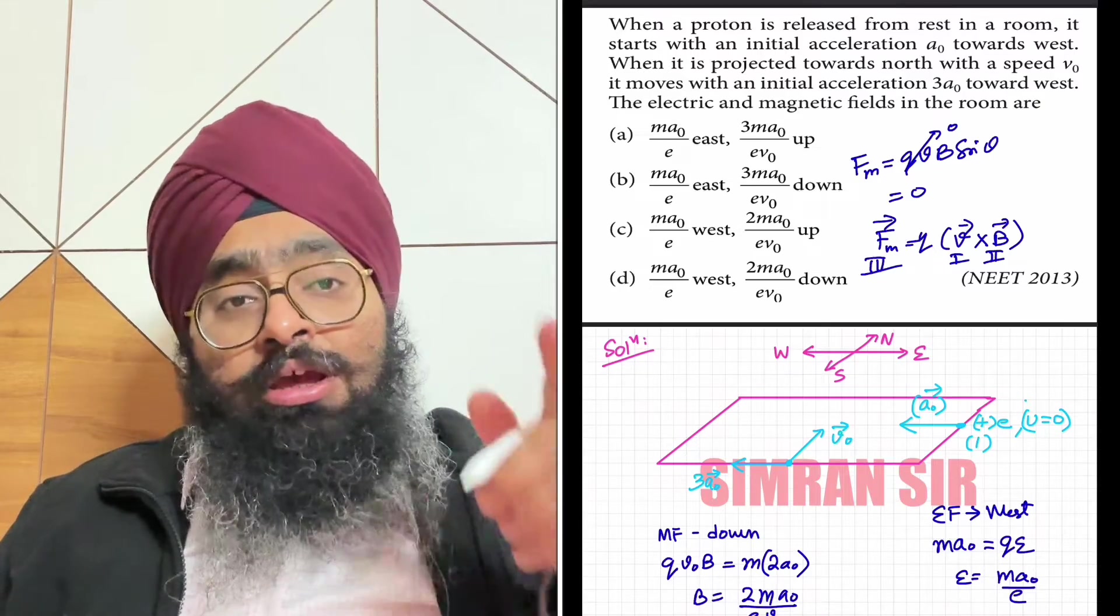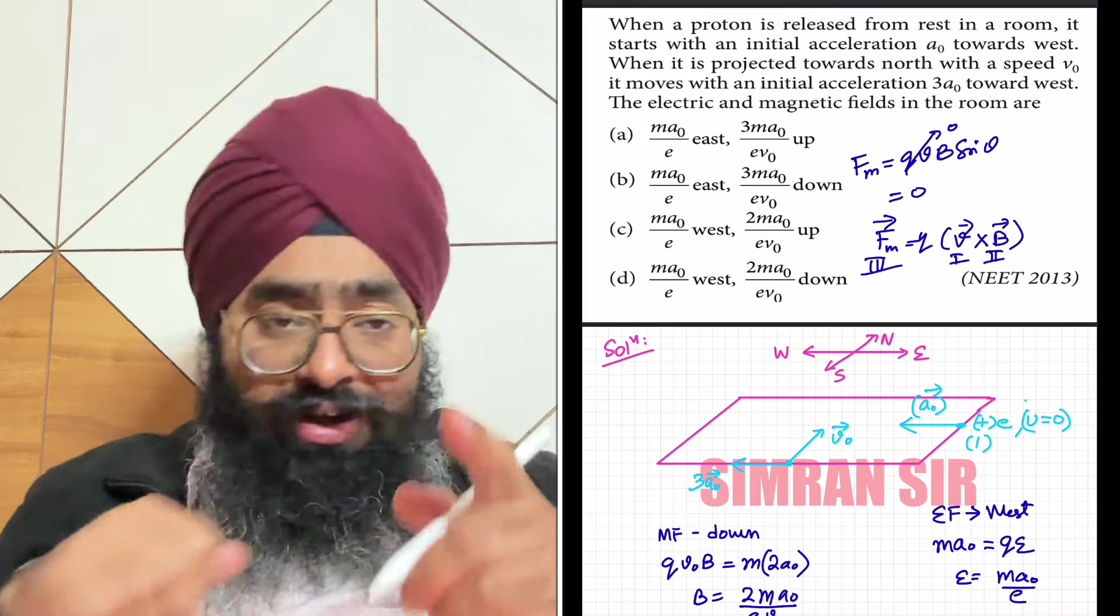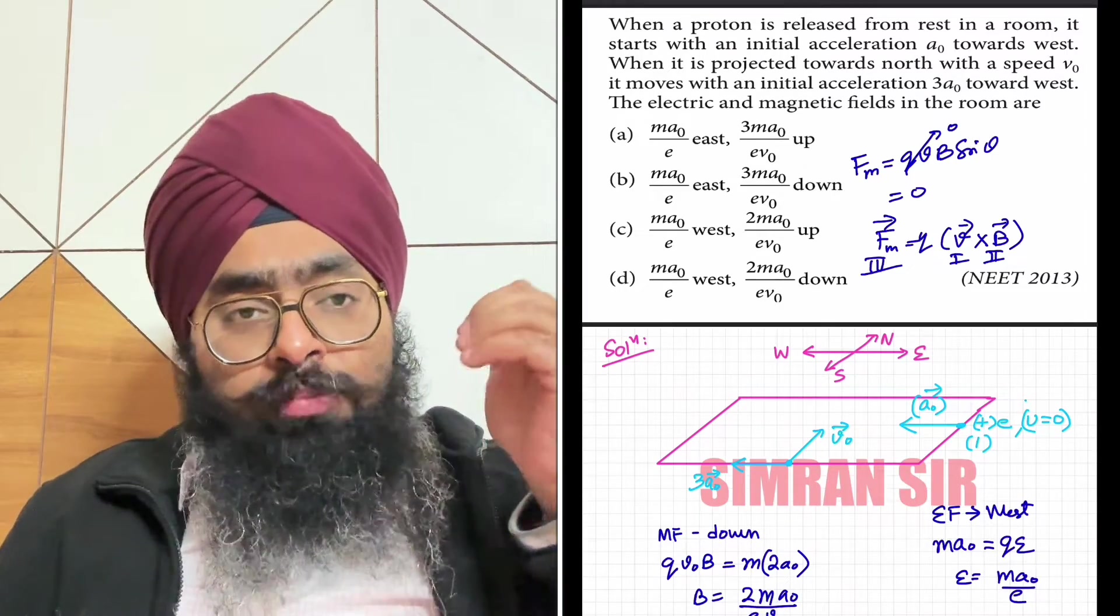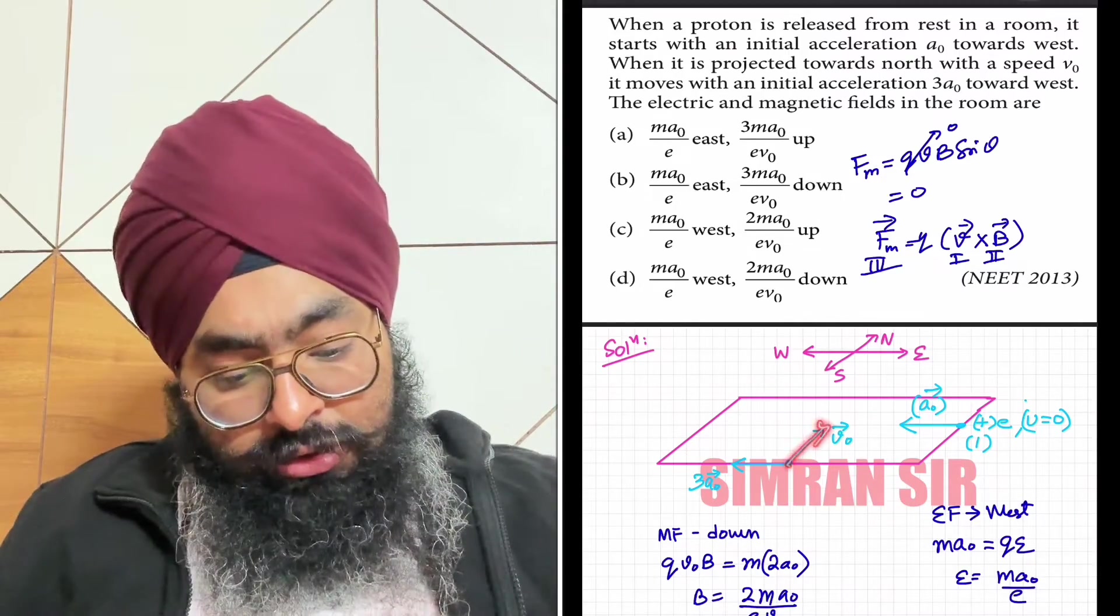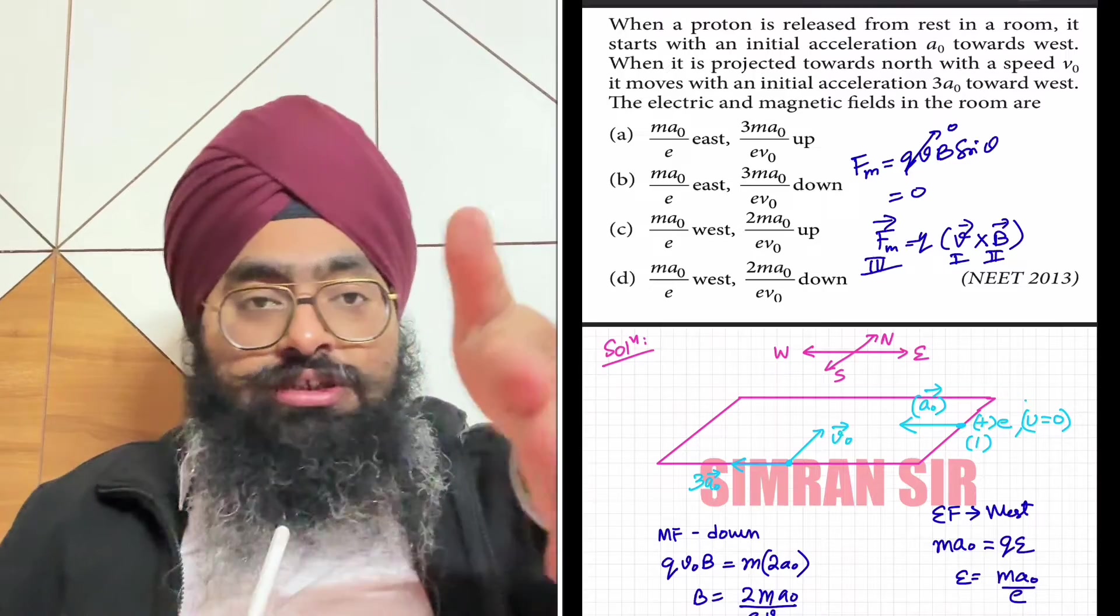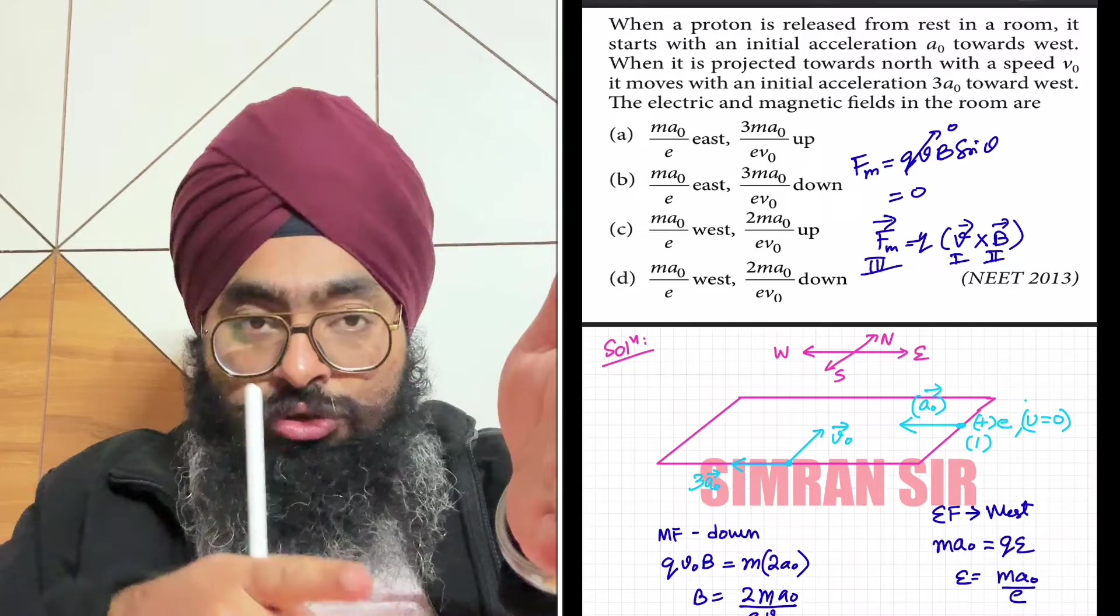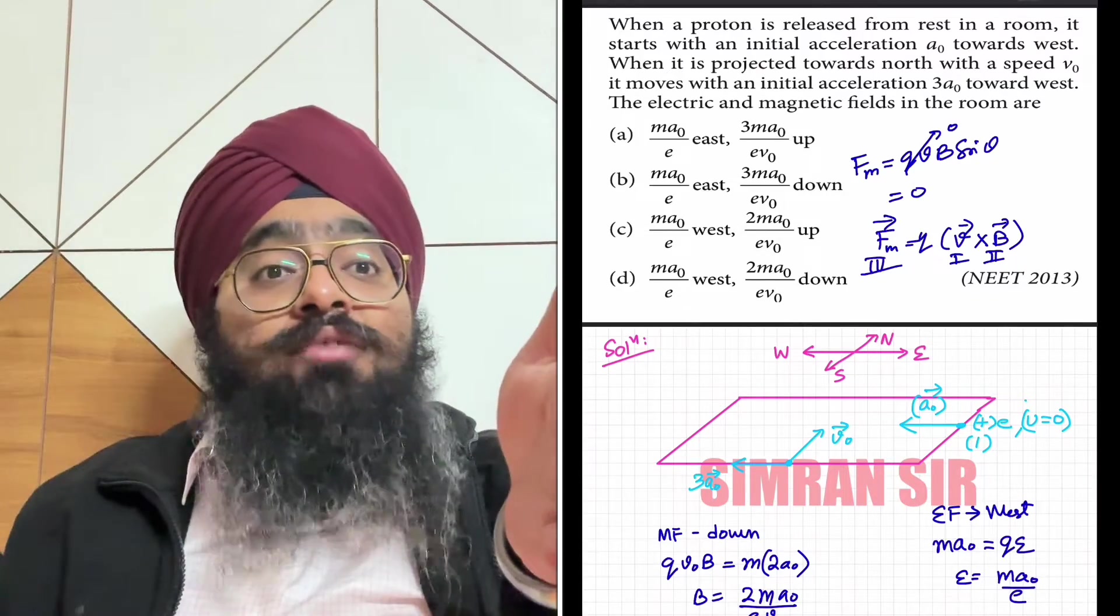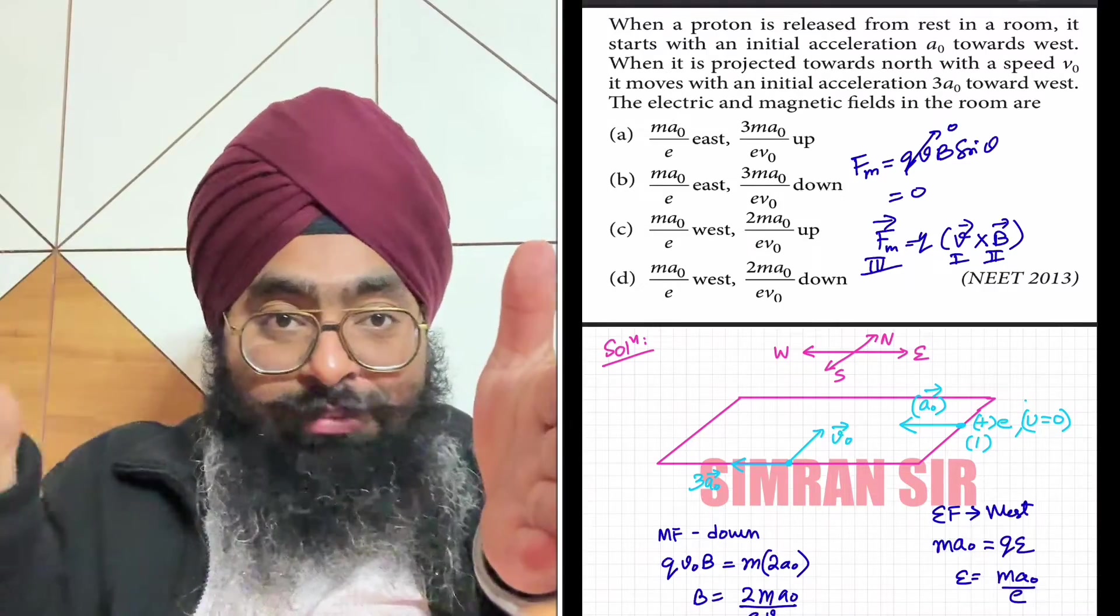First vector v is in the north direction. Force - where is the force? Magnetic field - where will the thumb point? Towards west, because acceleration is towards west. So thumb is towards west because the thumb gives the force, the third vector.